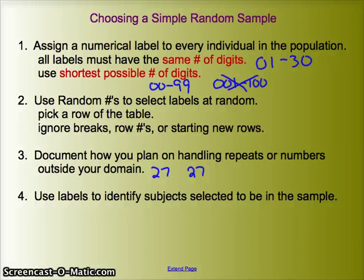We also have to talk about what we're going to do with numbers outside our domain. I've numbered my students from 01 to 30. What if the random number that comes up happens to be 54? Well, most likely we're going to ignore that. So when you're asked to define a methodology, you're going to talk about how do I number people, how do I handle repeats, and how do I handle numbers outside the domain.